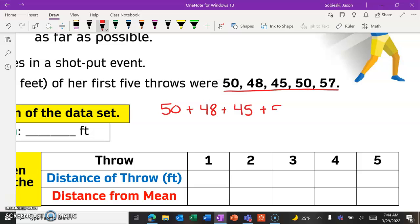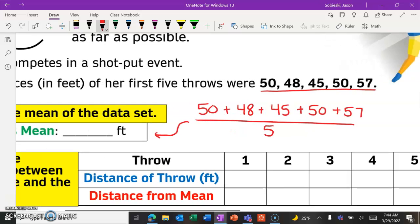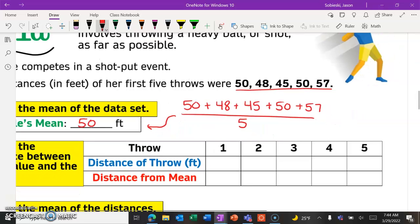So all we have to do is add up all of our numbers in the data set. We're going to write an addition problem, and then we are going to divide by the amount of numbers. There are five here, just like we're used to taking for mean or average. So add them up, divide by five, this should give us a mean of 50 feet. That's the first part.